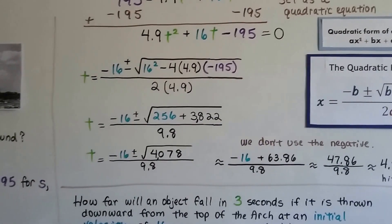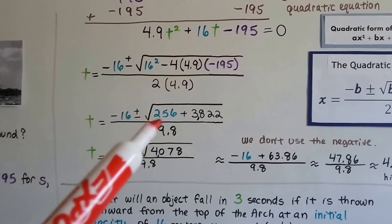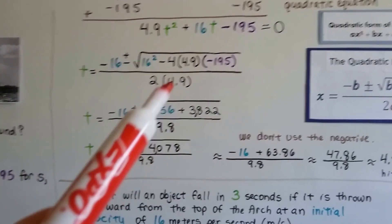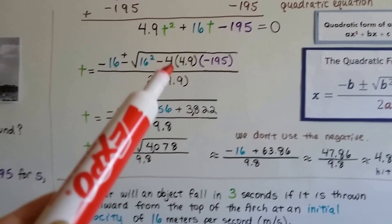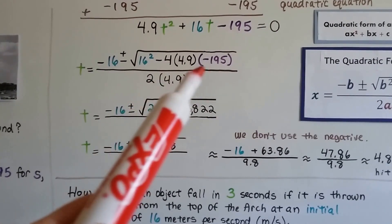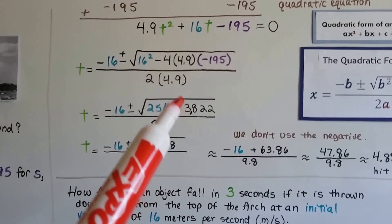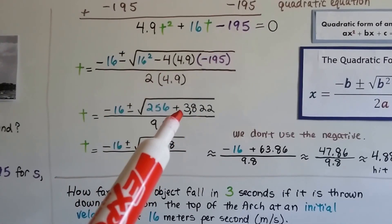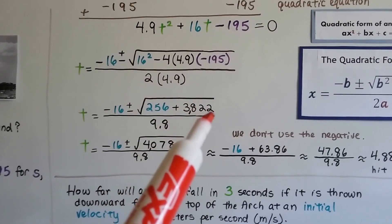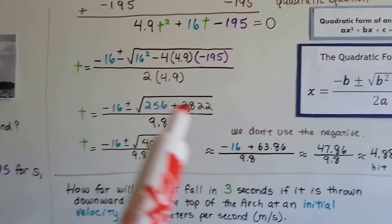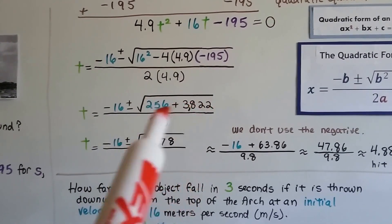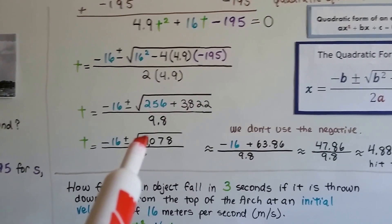Now all we have to do is do the math. 16 times 16 is 256. If we multiply a negative 4 times a 4.9 and then multiply it by a negative 195, we get a positive, because of the negative and the negative, a positive 3,822. We add these two together underneath the radical sign and we get 4,078.